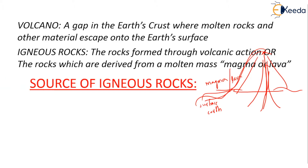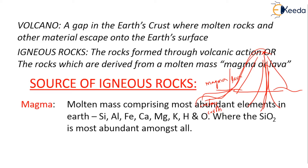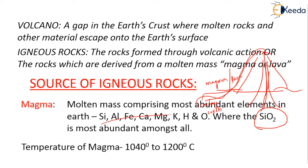So what is the source of igneous rock? The main source is magma — a molten mass comprising very abundant elements like silicon, aluminum, ferrous, calcium, magnesium, potassium, hydrogen, and oxygen. We have to understand that SiO2 (silicon dioxide) is the most abundant among all these elements. The temperature of the magma is around 1040 degrees Celsius to 1200 degrees Celsius.